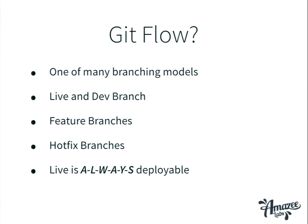Git Flow is one of many branching models — I don't say it's the right one but it works fine for us. We have a live and a dev branch. Nobody ever commits directly into the live branch — all merges to the live branch are done by pull requests or manual merging. There are also feature branches that you create from live, develop on, and merge back. There are also hotfix branches. One important thing: live is always deployable. There's nothing like 'we shouldn't deploy live because it will break small things' — because if you have that, you will not be able to automate it.